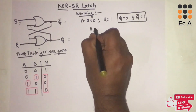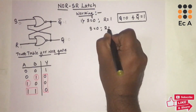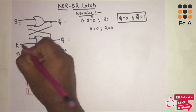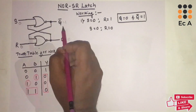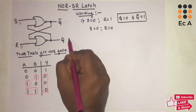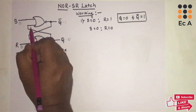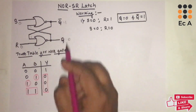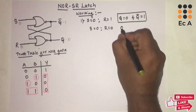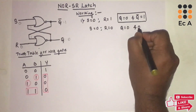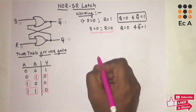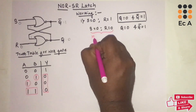Now let us take S=0 and R=0. The previous output of Q-bar is one. This one appearing at the input gives output zero, so Q remains zero. This zero feeds back, and 0-0 gives output one, so Q-bar remains one. We get the same output as before — Q=0 and Q-bar=1. That is why this state is known as the memory state.